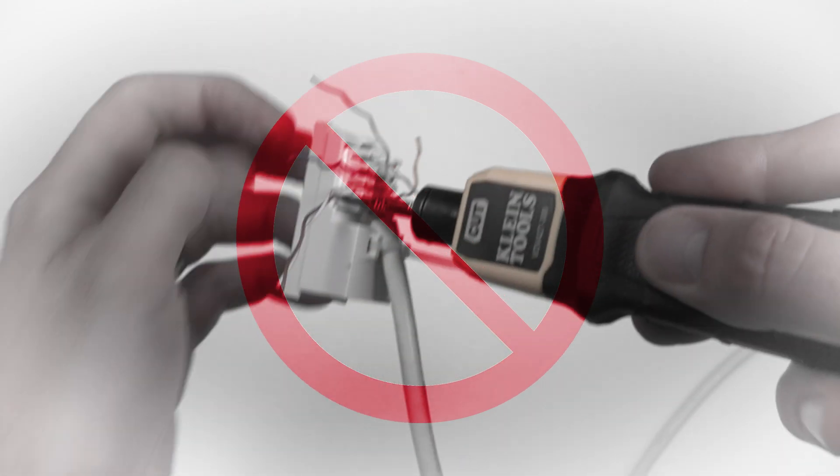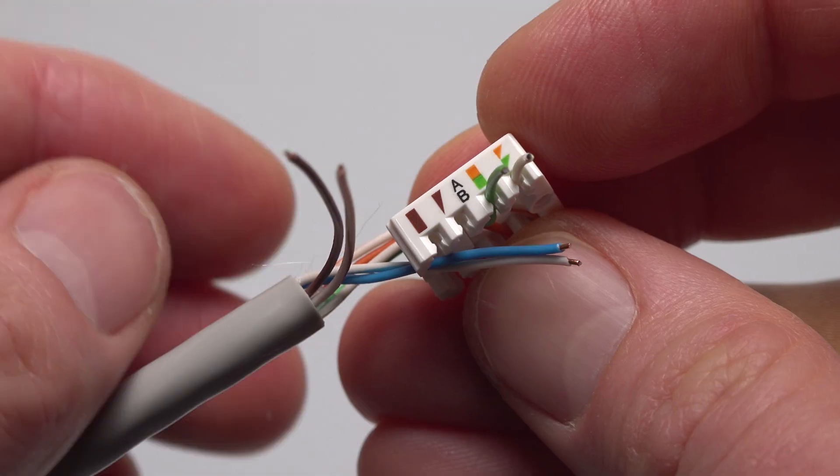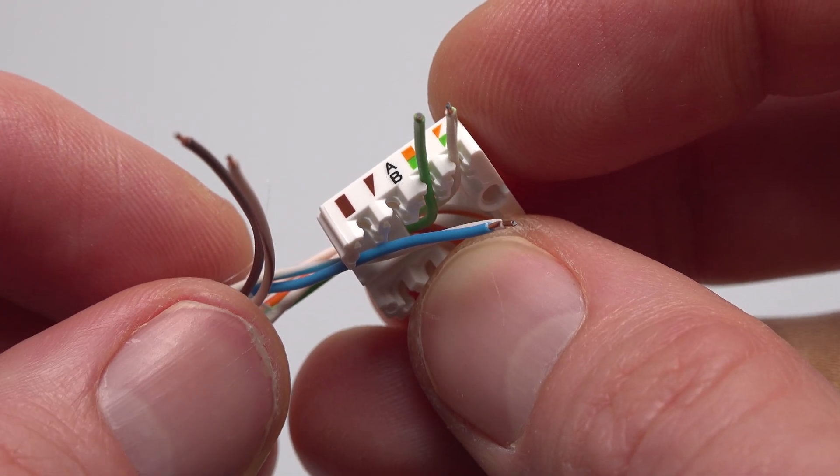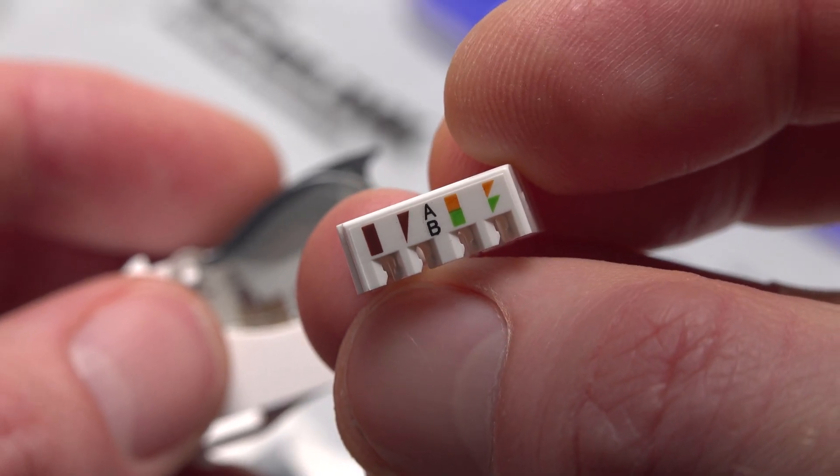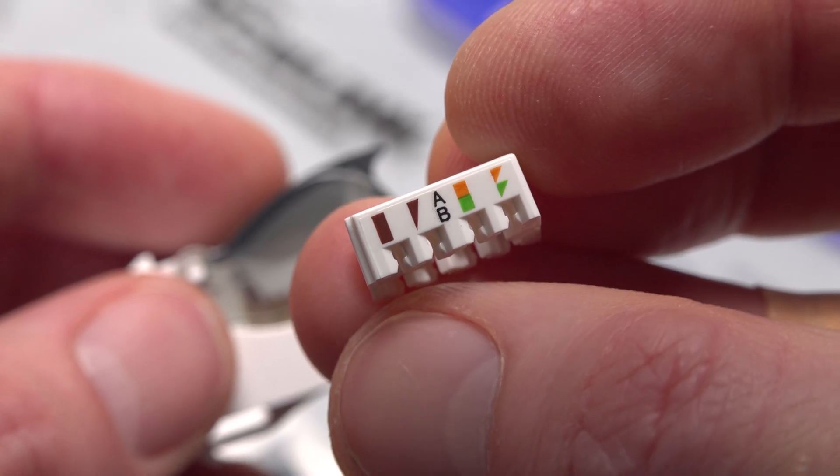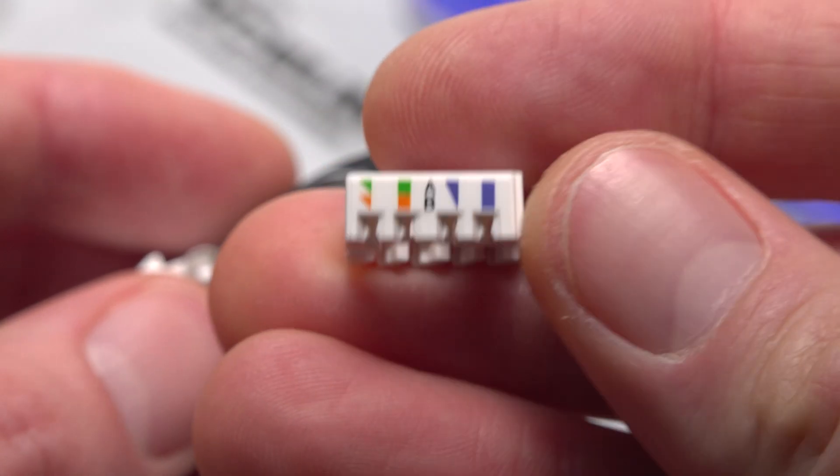Unlike with other types of keystone jack you don't need a punch down tool for this next step. You just match each wire up with the corresponding color on the connector cap and you can see on the top there that it tells you to put the greens on the left side and the oranges on the right side for the B standard and the other way round for the A standard.